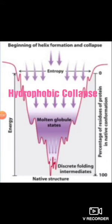Looking at the diagram, this is the beginning of helix formation and collapse. The protein starts in the unfolded form, where entropy is high. Once folding begins, there will be a hydrophobic collapse, forming the molten globule state. The molten globule state is generally the intermediate of the folding pathway. After the molten globule state, you get discrete folding intermediates, and then the native structure.